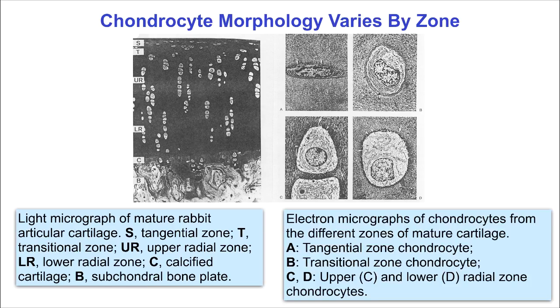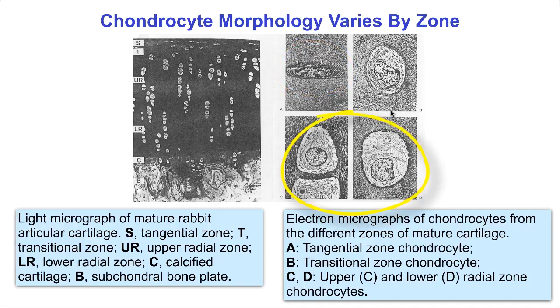Chondrocyte morphology also varies with the cartilage zone. The cells are elongated and tangentially oriented in the superficial zone but more rounded in the middle and radial zone.